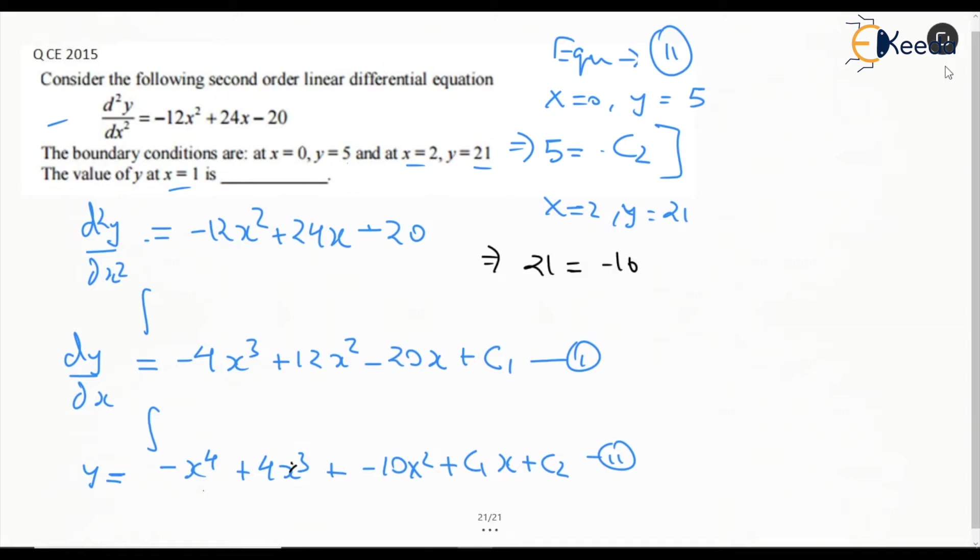...minus 10×4 plus 2c₁ and c₂. So c₁ is also found, c₂ is also found.